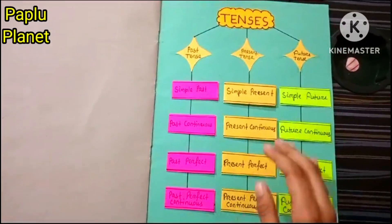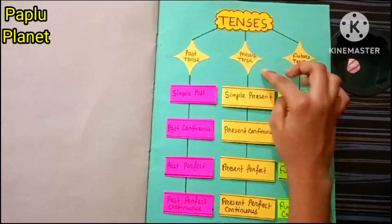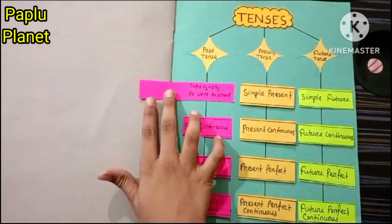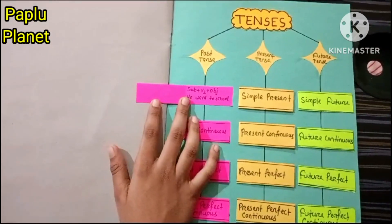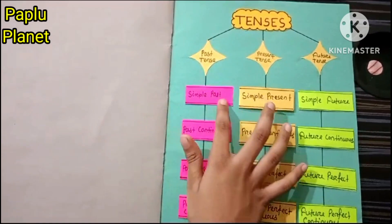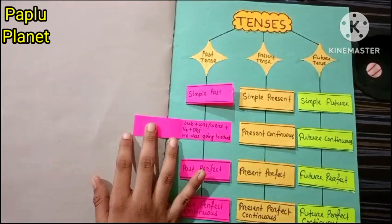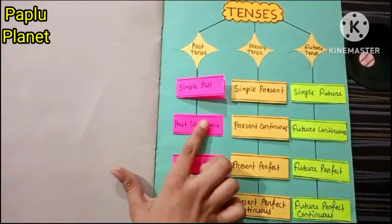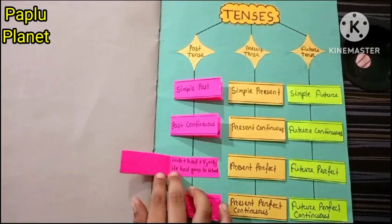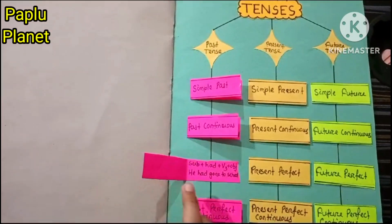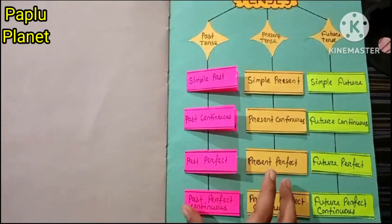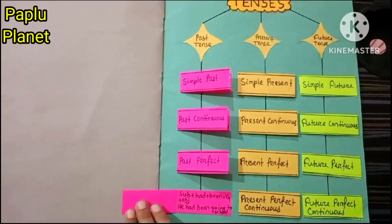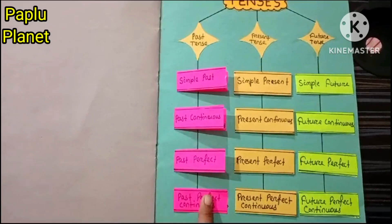Let's move to my tenses project. Past tense, present tense, future tense. Simple past: subject + V2 + object. He went to school. Past perfect: subject + had + V3 + object. He had gone to school. Past perfect continuous: subject + had + been + V4 + object. He had been going to school.